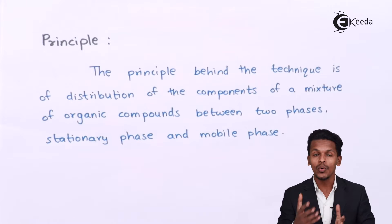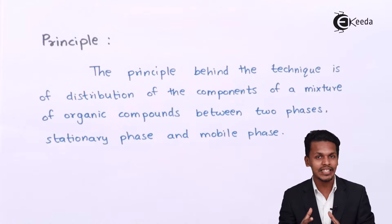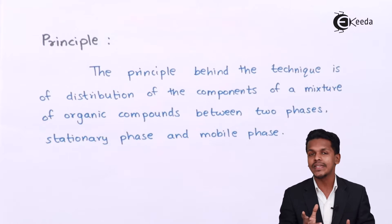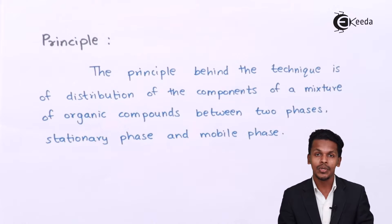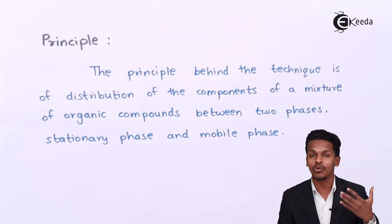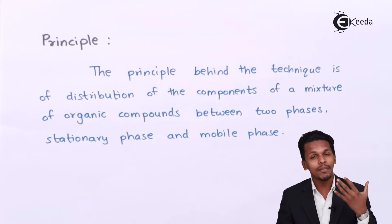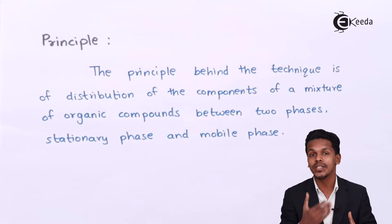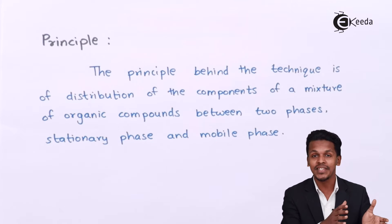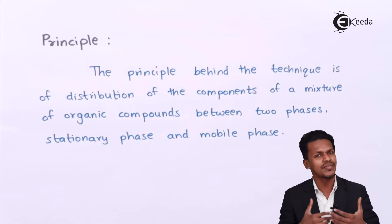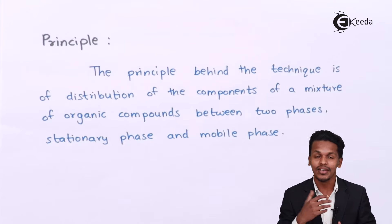The mixture of organic compounds is kept in the stationary phase, and a mobile phase — which can be a liquid or a gas — is passed through the stationary phase. The mobile phase separates the mixture of organic compounds that are adsorbed on the stationary phase. That is how separation and purification occur in chromatography.